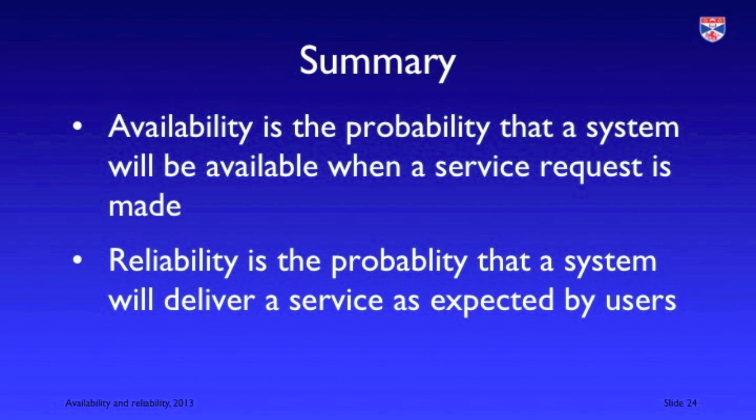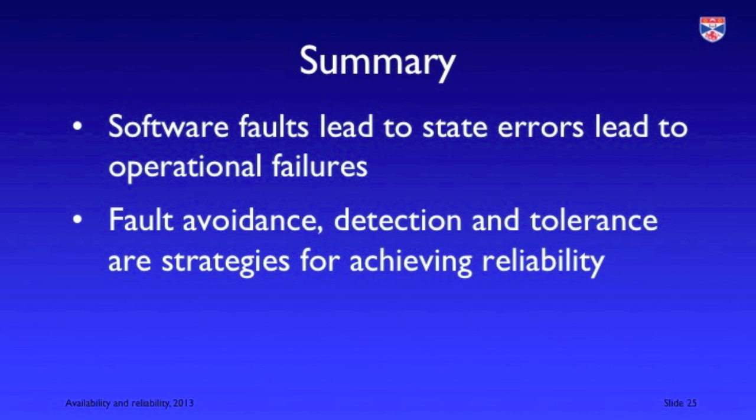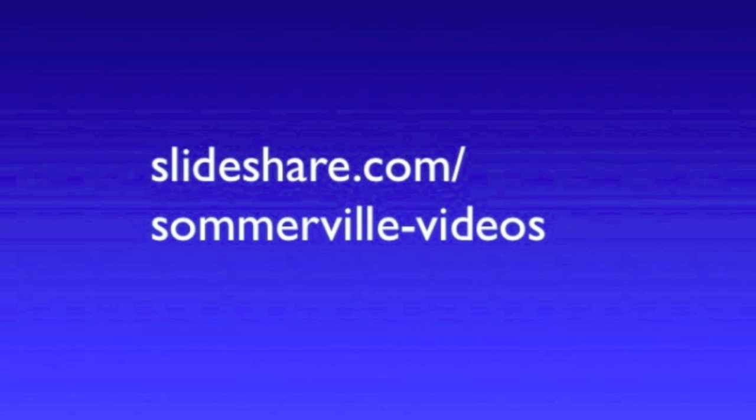In summary, availability is the probability that the system will be in service when a request is made. Reliability is the probability that a request will be serviced correctly — that is, give the right answer. Software faults lead to state errors which lead to system failures, and the mechanisms we use to achieve reliability are fault avoidance, fault detection, and fault tolerance. You can download the slides that accompany this video from my SlideShare account.